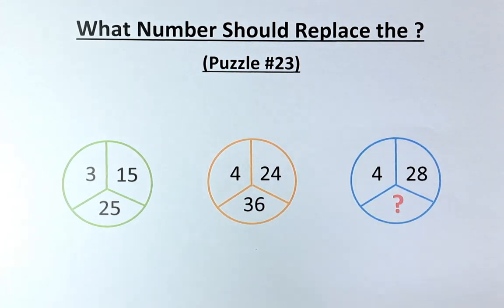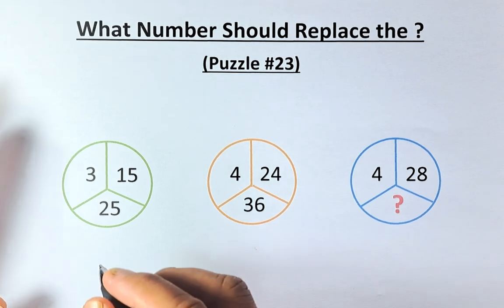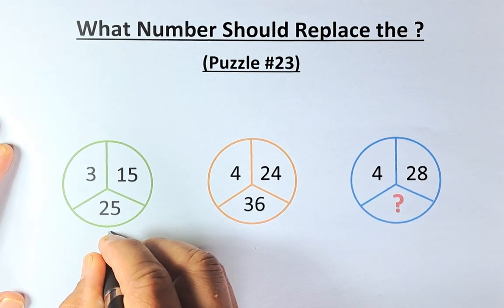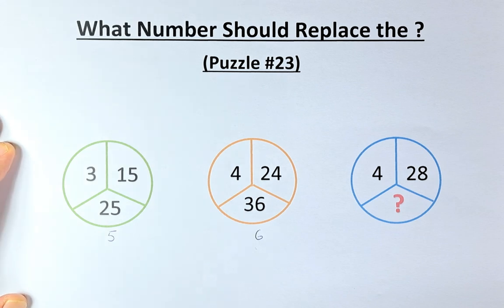So you look at 25, 36. They are actually square numbers. So what we're going to do, we are going to square root that number at the bottom. So square root of 25 is going to be 5 and square root of 36 is going to be 6. So now you can see the pattern.